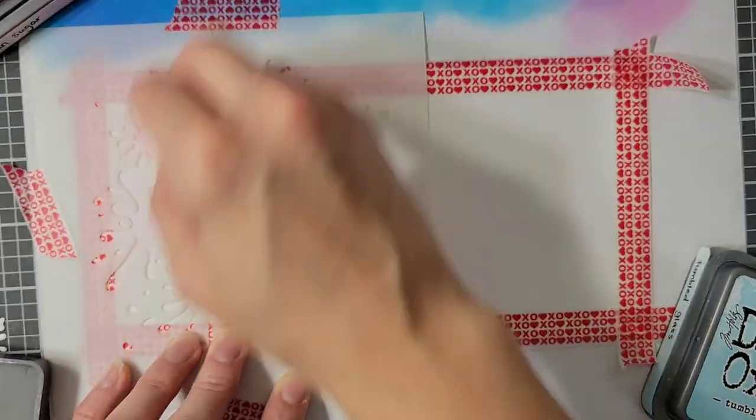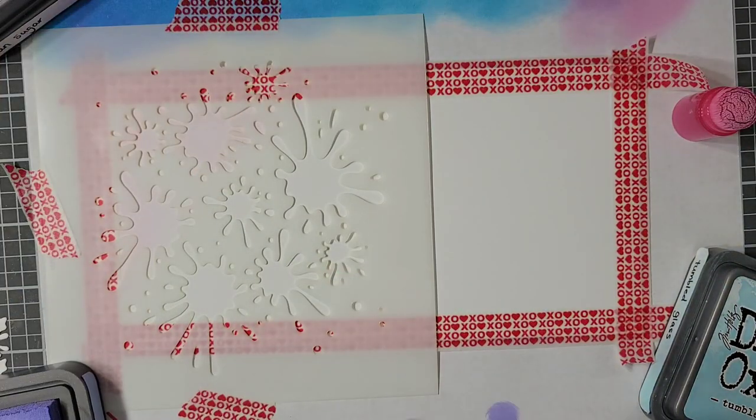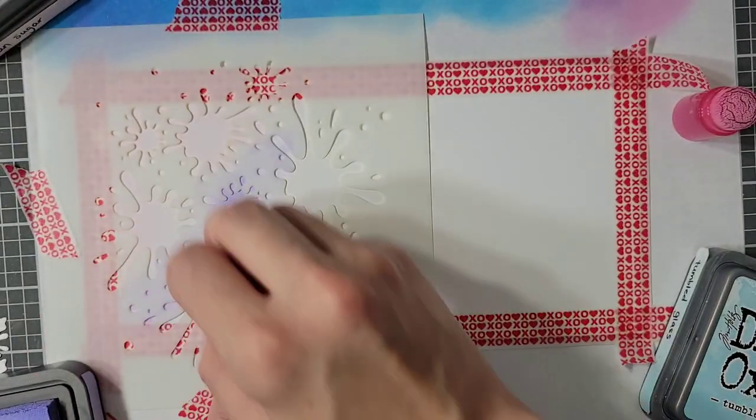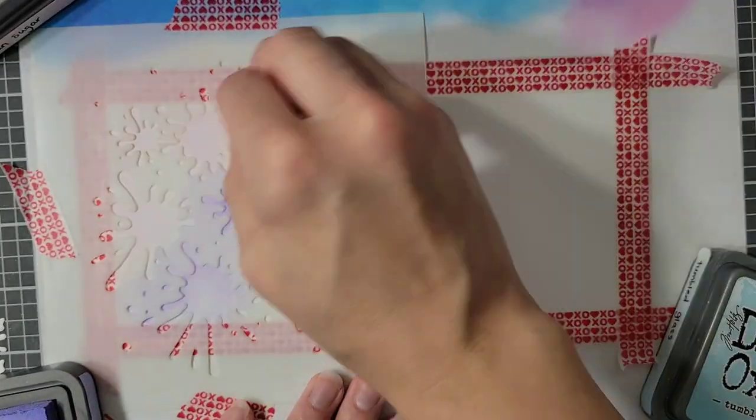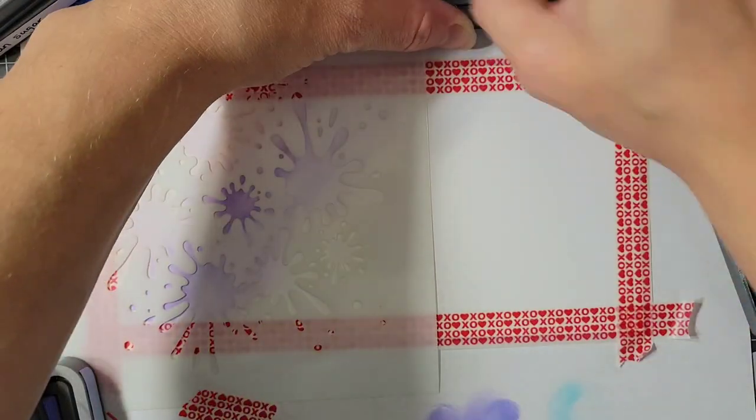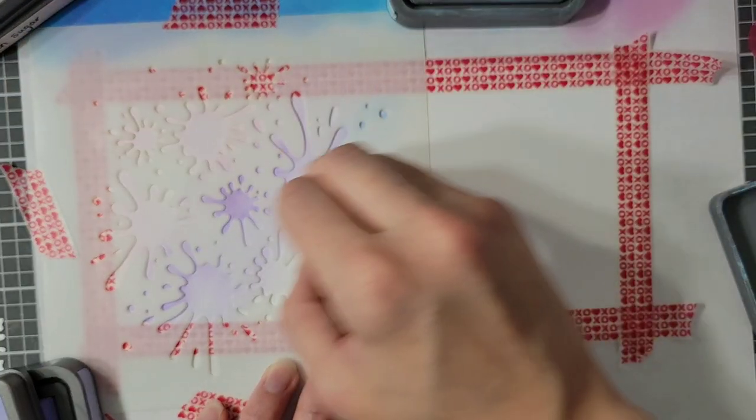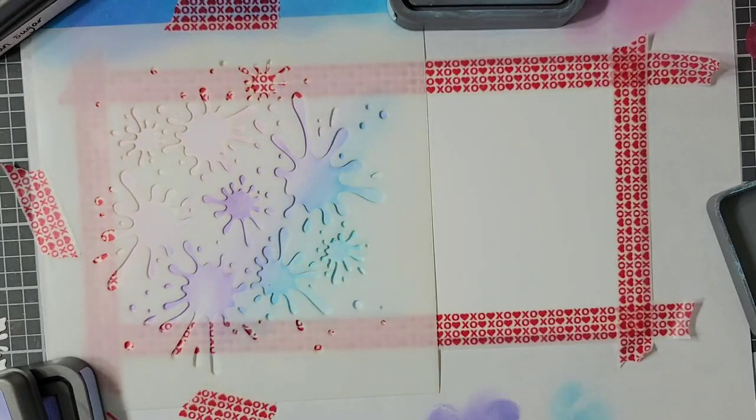I am ink blending this with Spun Sugar, Shaded Lilac, and Tumbled Glass Distress Oxides. I was trying to keep it very light and that purple got kind of dark, so luckily the teapot ends up right there, so a lot of that darkness you don't actually see. But when I envisioned this, the whole thing was very pastel.